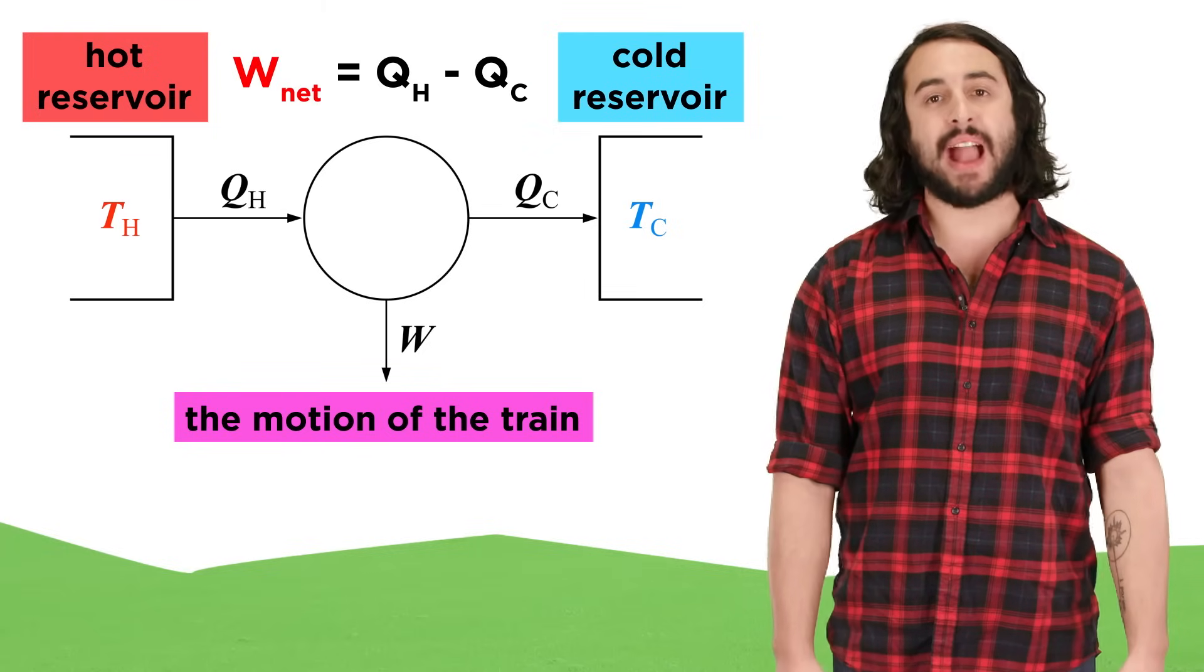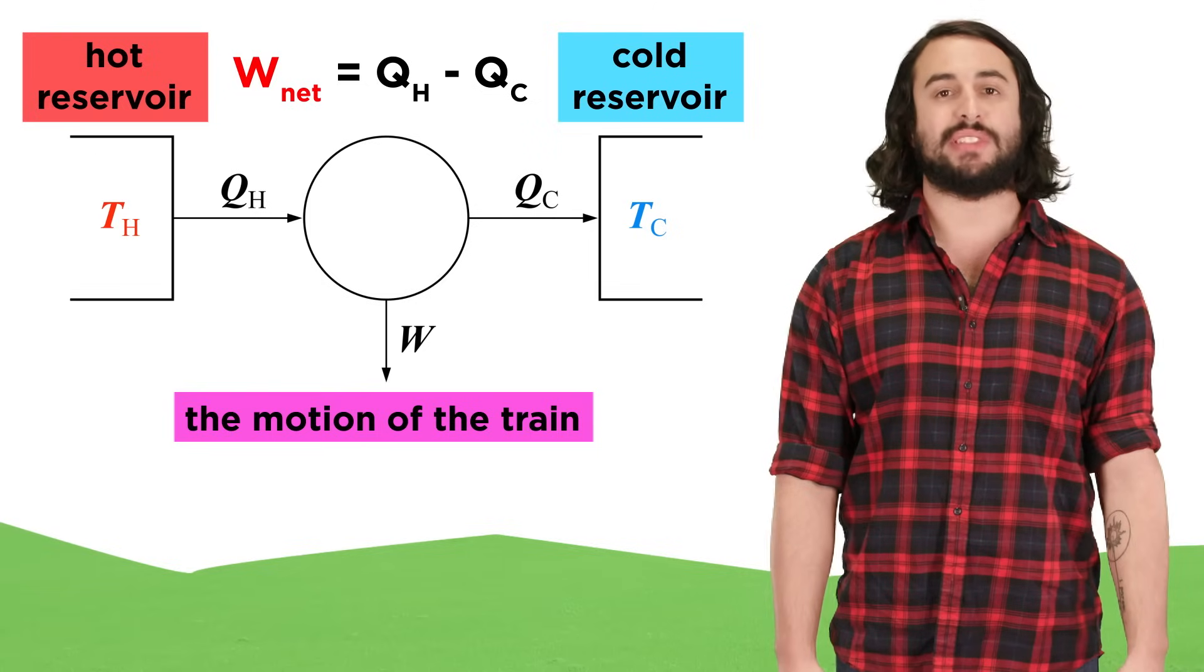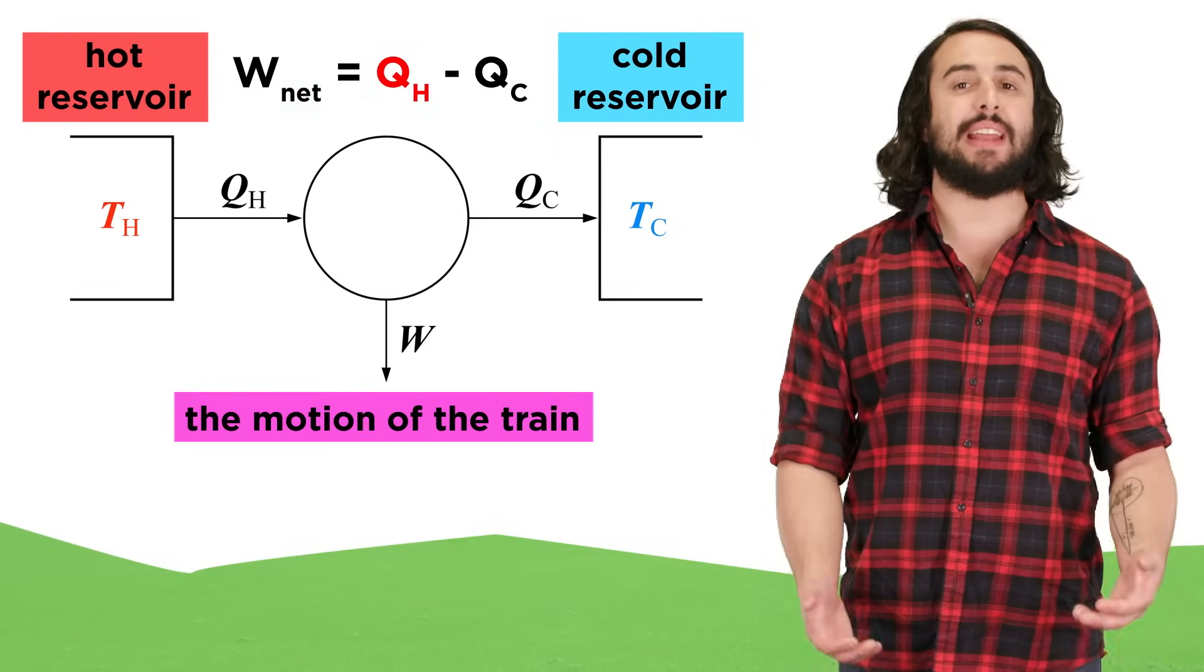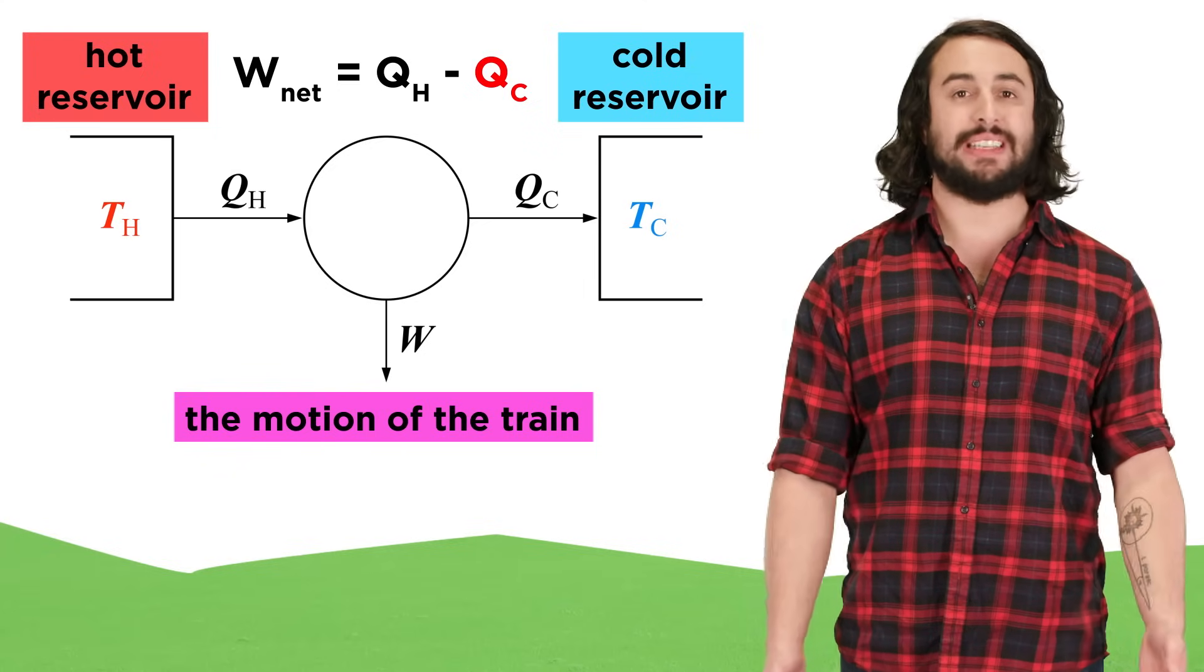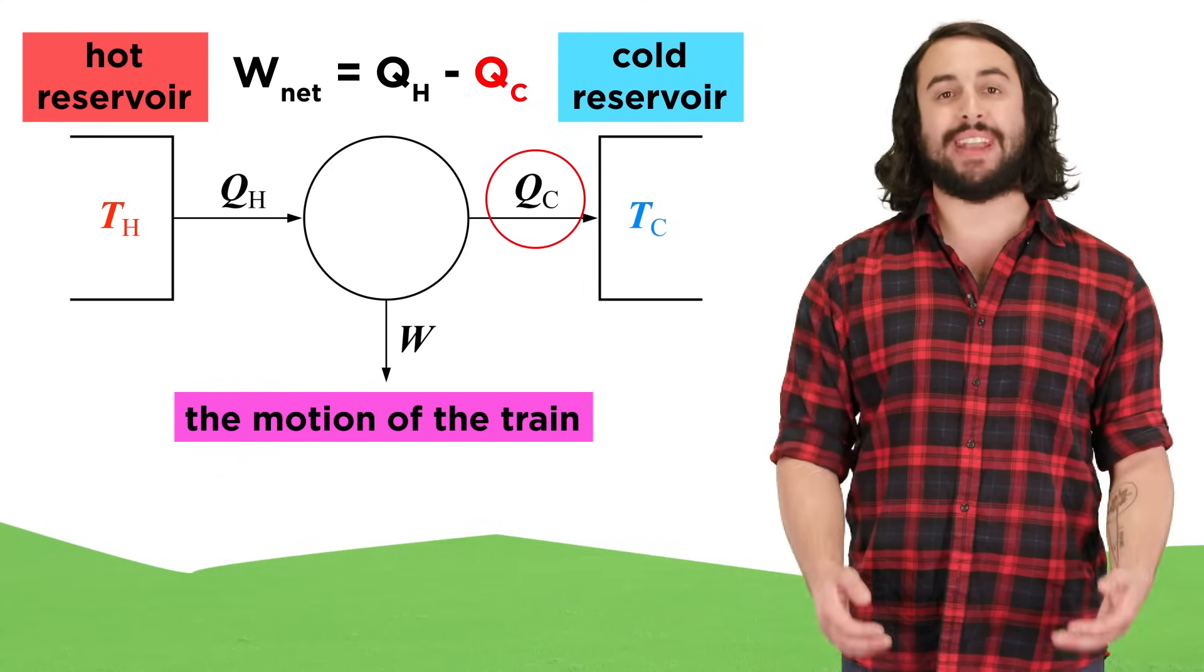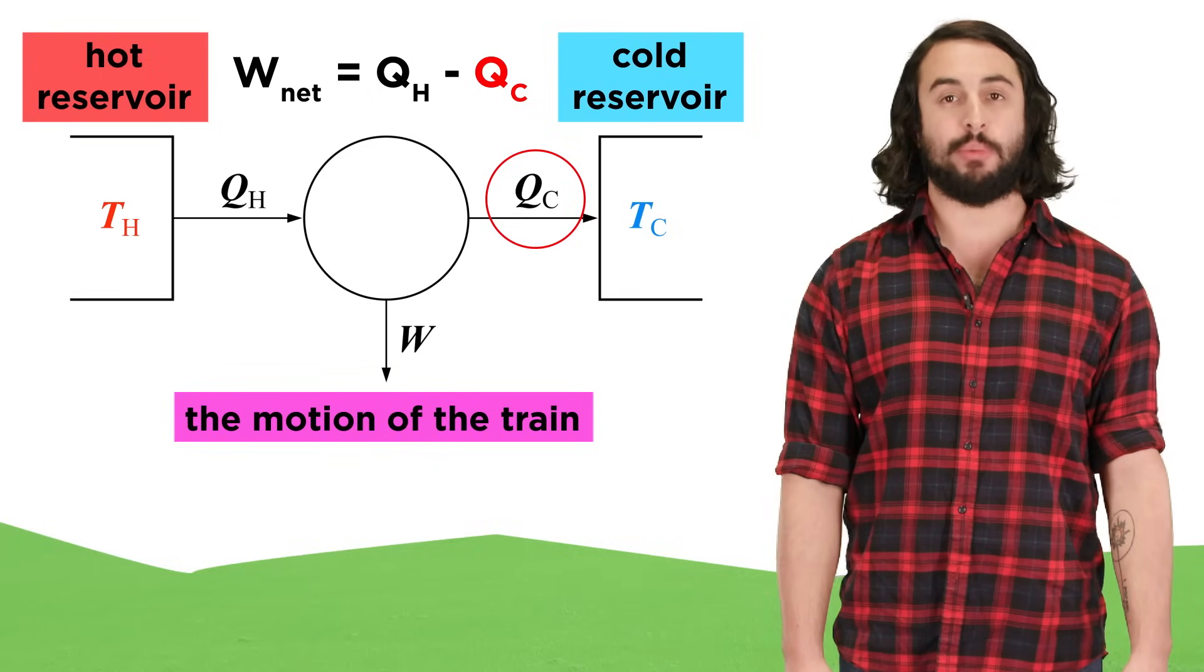Carnot understood that the maximum work, or W net, that can be done by one cycle of such an engine is equal to the heat input, or Q_H, minus the heat output, or Q_C, since any heat lost will not be able to be converted into work due to the first law of thermodynamics.